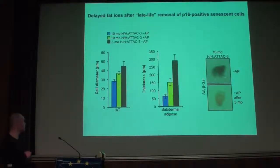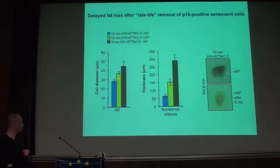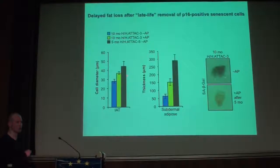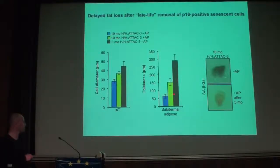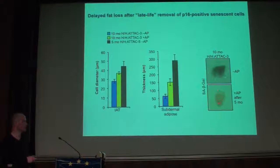Measurements of inguinal adipose tissue cell diameter show that fat loss is delayed in treated animals. However, it is not stopped or reverted — we are only able to delay these aging phenotypes with late treatment. The subdermal adipose tissue of the skin shows the same pattern, and beta-gal staining of inguinal adipose tissue after treatment confirms that senescent cells are still being cleared.